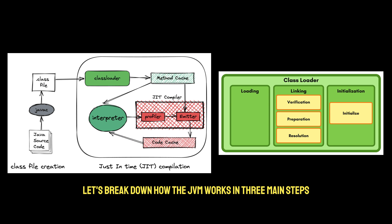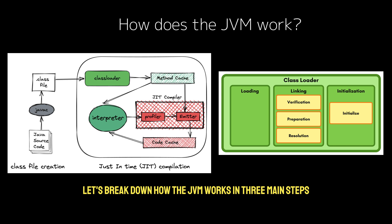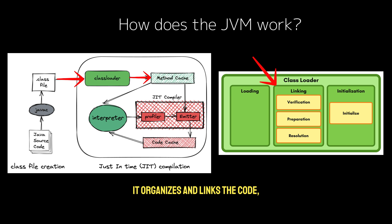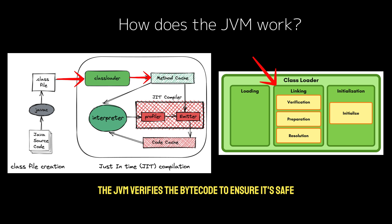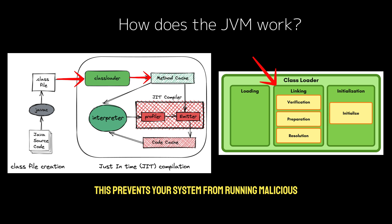Let's break down how the JVM works in three main steps. First, the class loader loads the bytecode into the JVM. It organizes and links the code, making sure everything is in place. Before running the code, the JVM verifies the bytecode to ensure it's safe and doesn't break any rules. This prevents your system from running malicious or incorrect code.